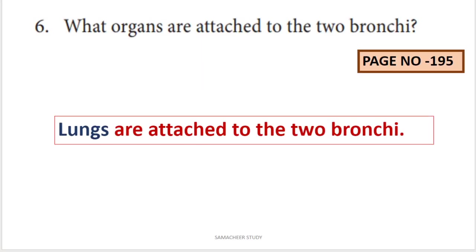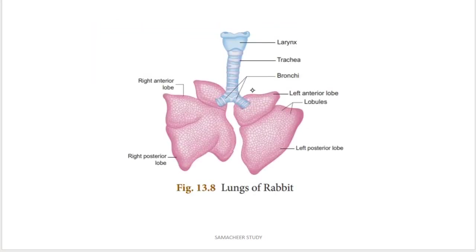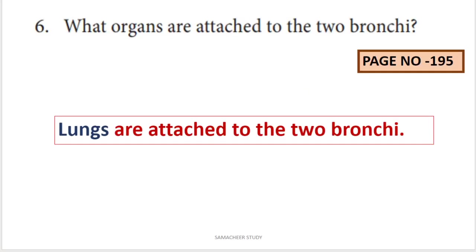Next question: what organs are attached to the two bronchines? This is in the case of the rabbit's respiratory system. The lungs are attached to the two bronchines. So the answer is lungs.